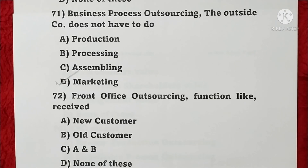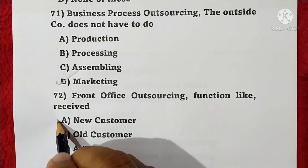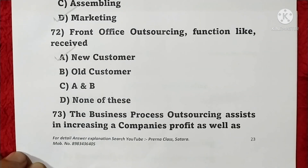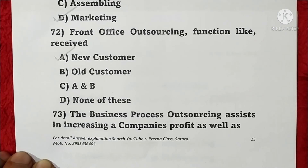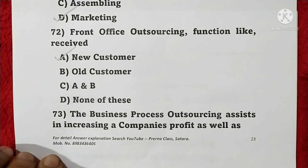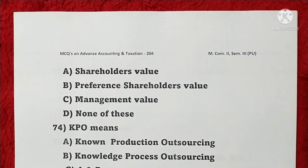Question 72: Front office outsourcing functions include receiving new customers — option A is correct. Question 73: Business process outsourcing assists in increasing a company's profit as well as shareholders' profit — option A is correct.